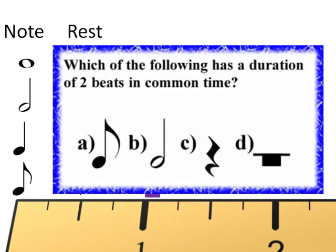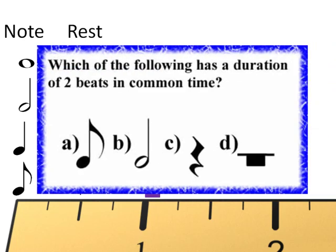Here is a sample question: Which of the following has a duration of two beats in common time? The correct answer is B, the half note.